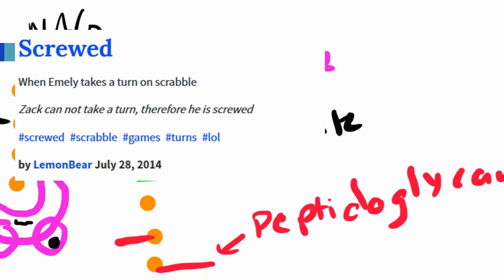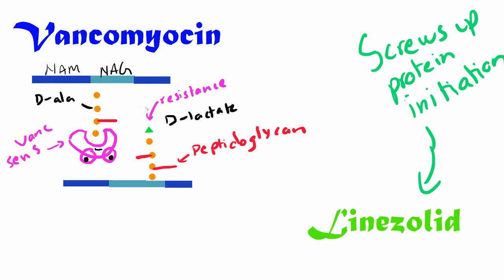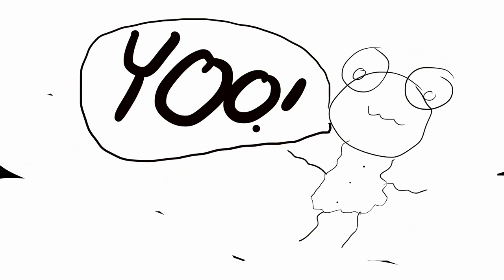If it's resistant to vanc, then that usually means that D-ala-D-ala has now been changed to something else, like D-ala-D-lactate. At this point, you're pretty much screwed. Linezolid's mechanism hasn't been described too well, but it messes up the protein synthesis initiation step. It screws around with the 30S, the 50S ribosomes, the tRNA, the mRNA. For community-acquired MRSA, we can use clindamycin or TMP-SMX.